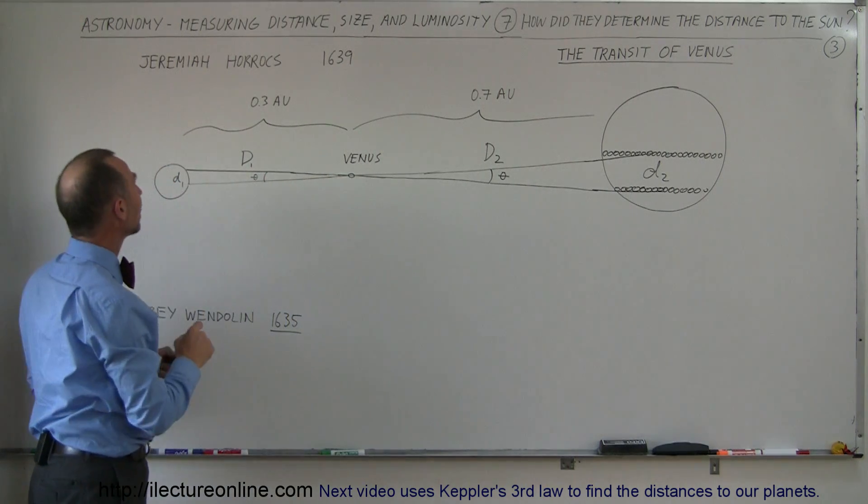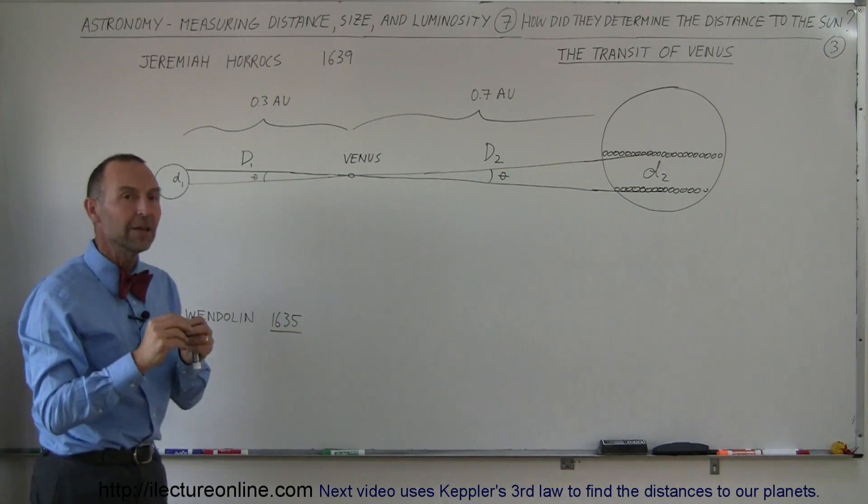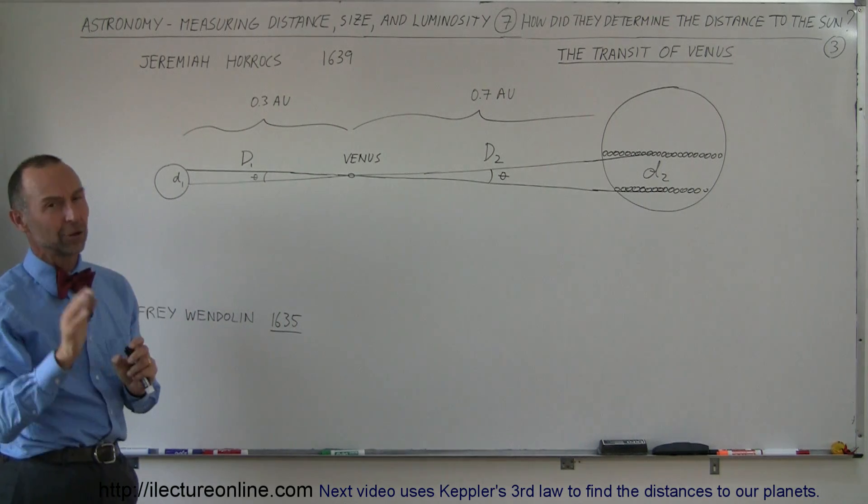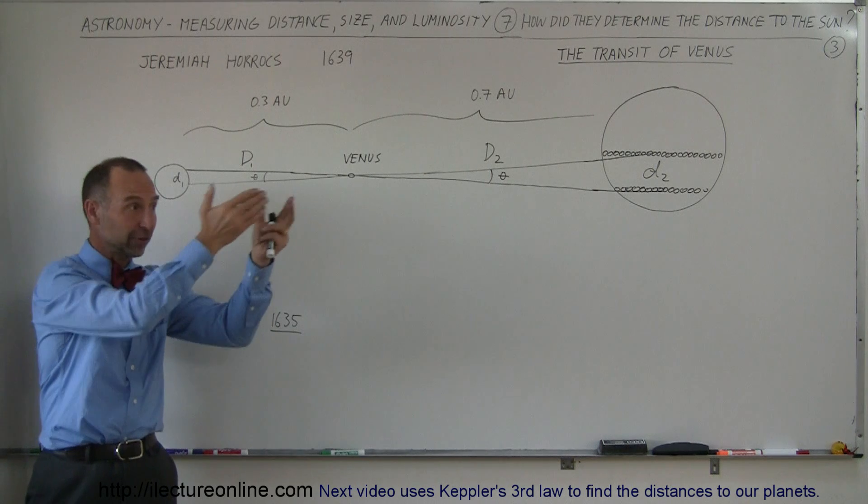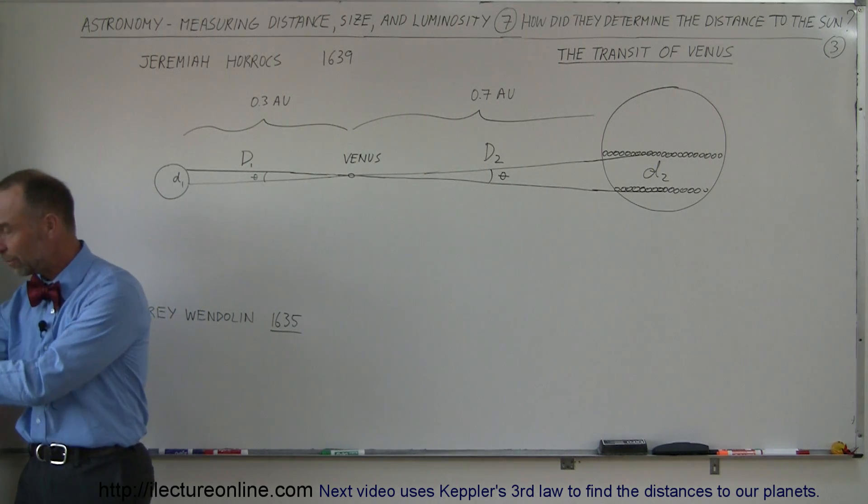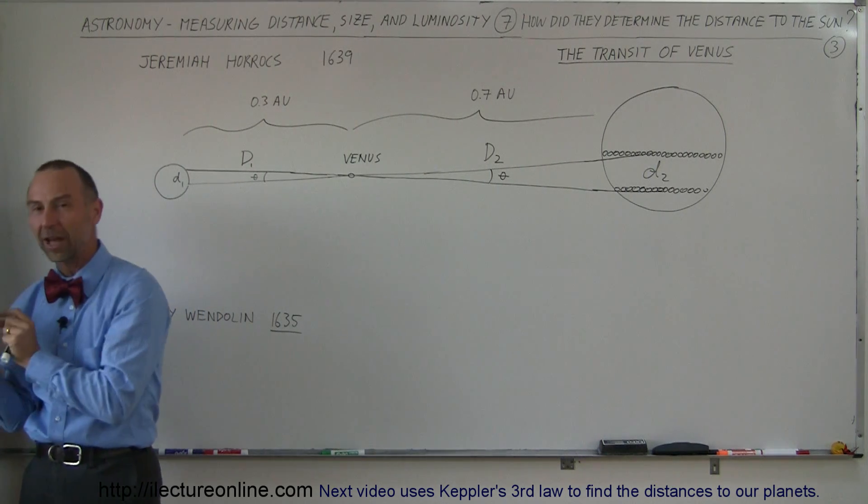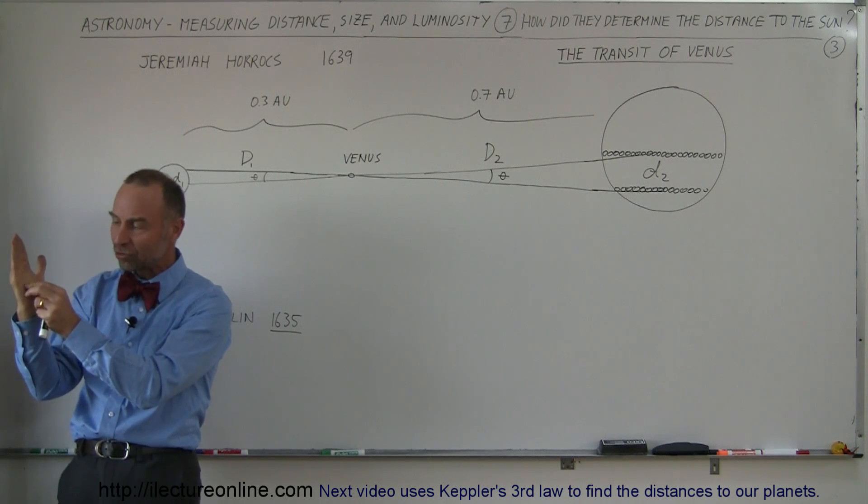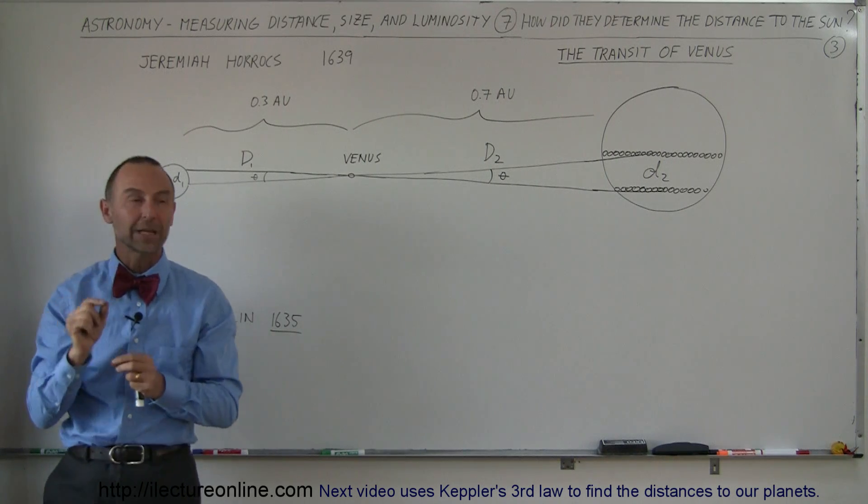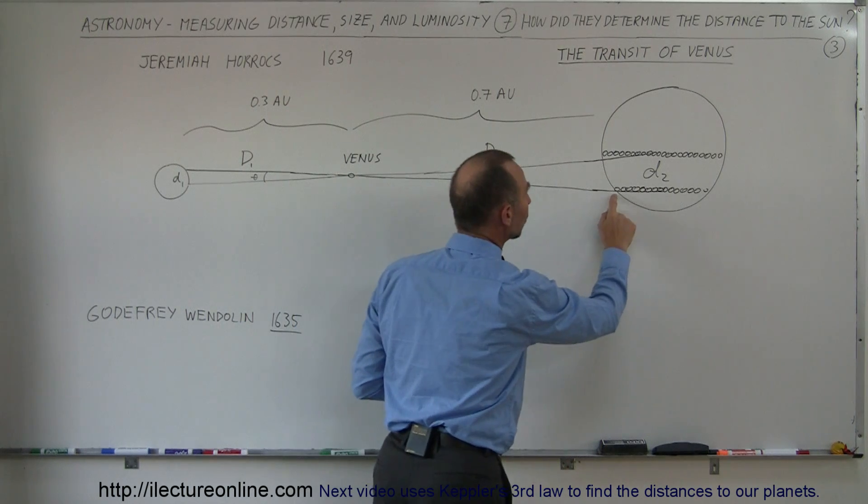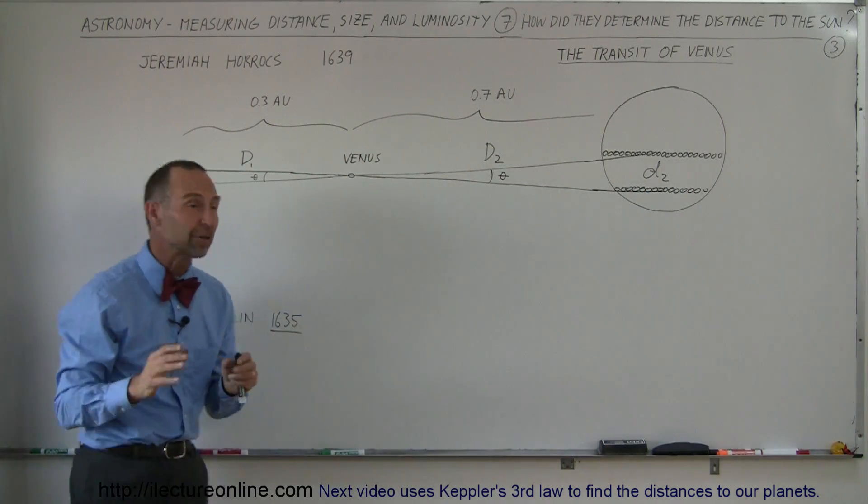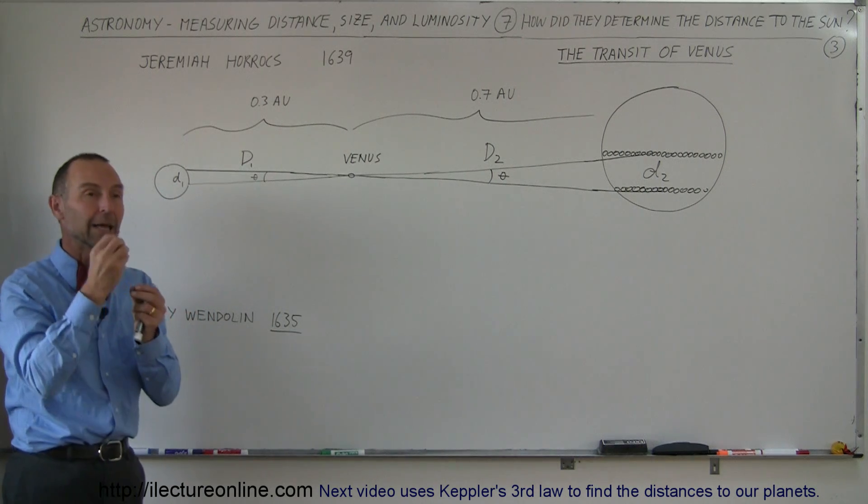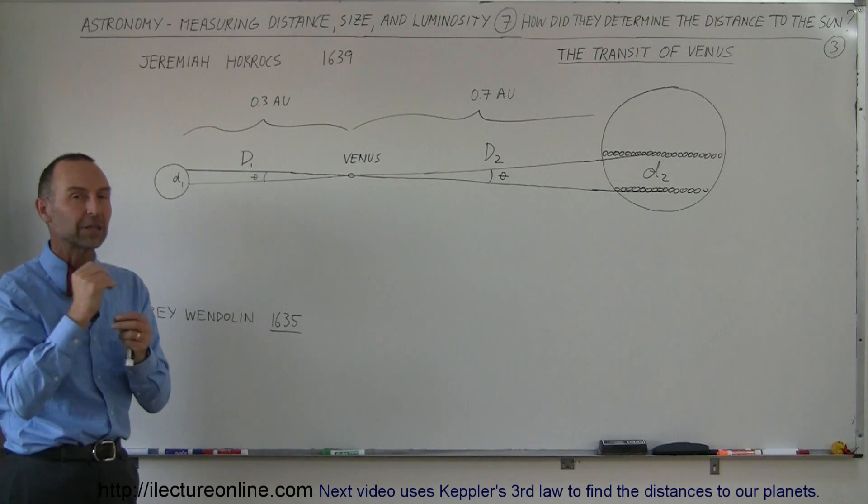So in 1639, Jeremiah Horrocks actually witnessed through a telescope - of course he didn't look through the telescope, bad idea. He allowed the light of the sun to go through the telescope onto a piece of paper and he could then see the disk of the sun and Venus traveling across the disk. And what he then did was he actually measured the time, how long it took Venus to go across the disk. But that wasn't really important yet at the time because he was the only one that actually took data of that particular transit.